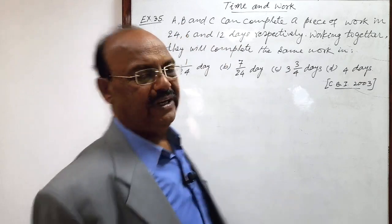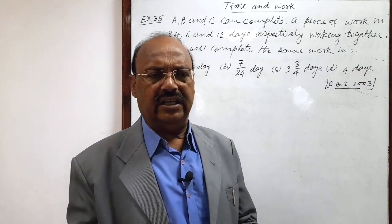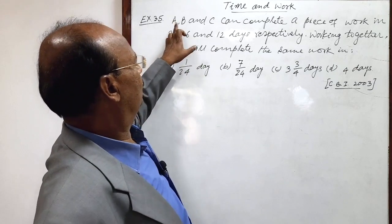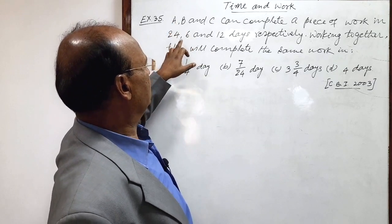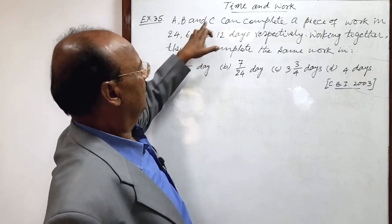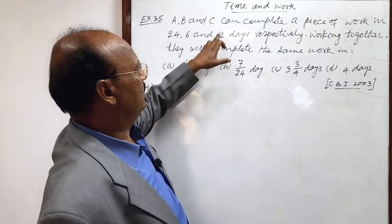Reciprocal of number of days is work done in one day. So, A's work done in one day is 1 by 24, B's work in one day is 1 by 6 and C's work in one day is 1 by 12.